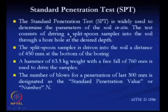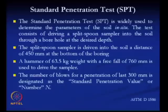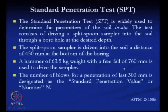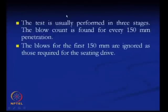The split spoon sampler is driven into the soil a distance of 450 millimeters at the bottom of the boring. A hammer of 63.5 kg is used with a free fall of 760 millimeters to drive the sampler. The number of blows for penetration of the last 300 millimeters is designated as the standard penetration value. This test is conducted in three stages.